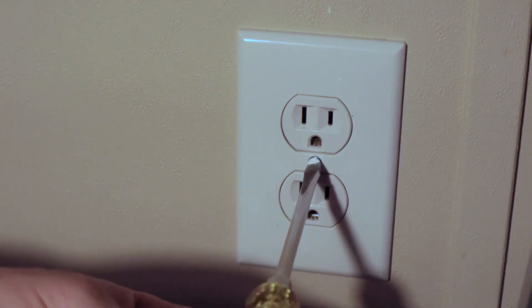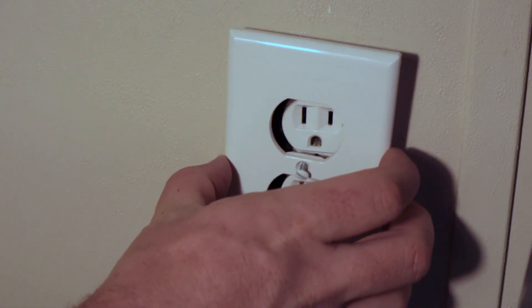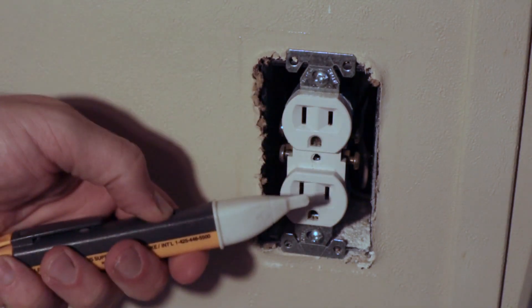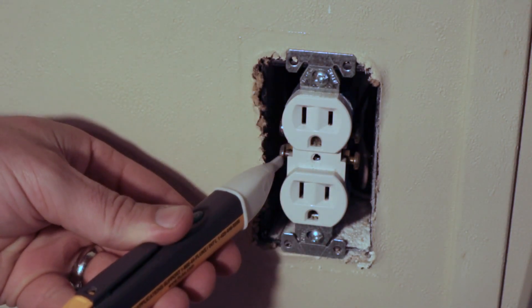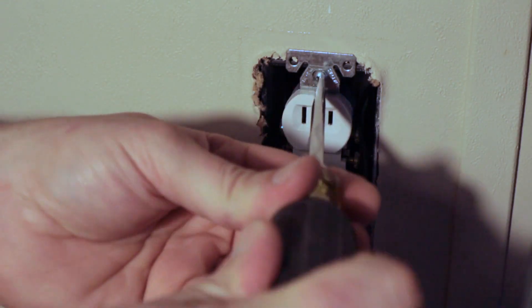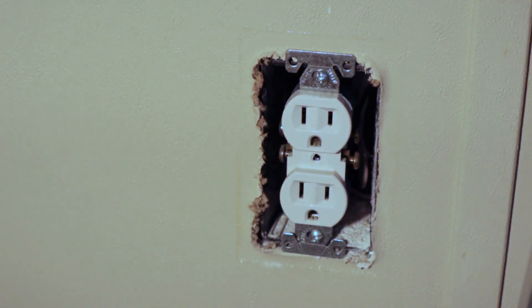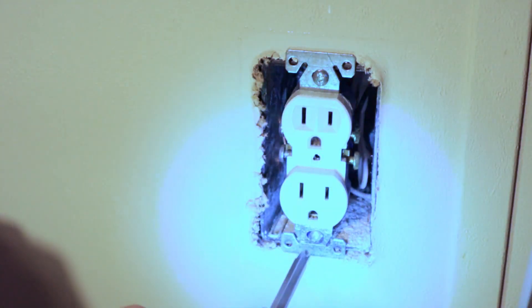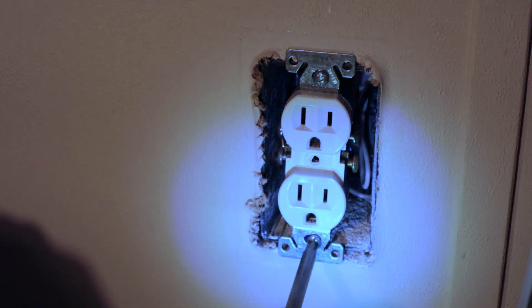First remove the existing cover plate. This is done using a flathead screwdriver. Always make sure the circuit is off that you're working on. I'm testing it here with a pen tester to make sure. Once I'm satisfied that the power is turned off, I remove the screws. You can use the flathead screwdriver or it's easier to use a drill, which is what I did in this case.